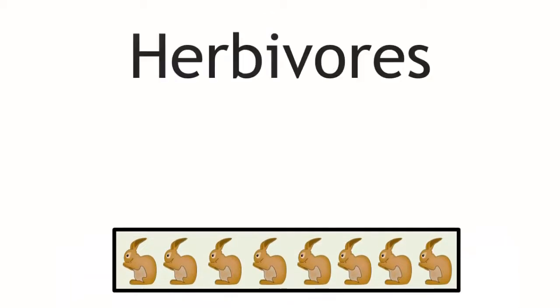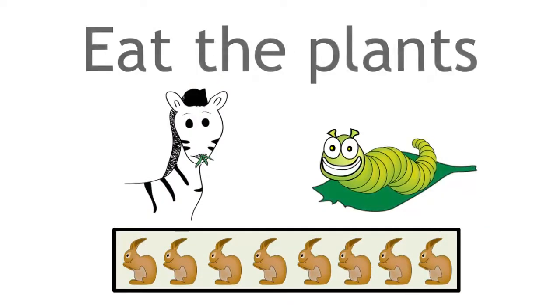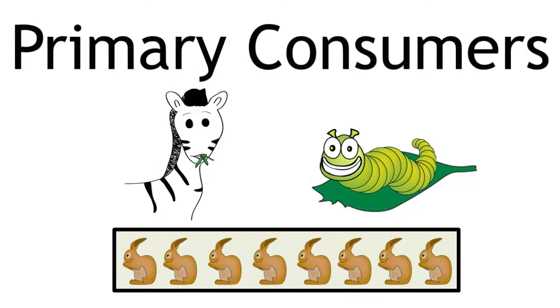From the producers, the second trophic level is the herbivores, the organisms that eat the plants. These organisms are called the primary consumers. They are the first step when nutrients are consumed.